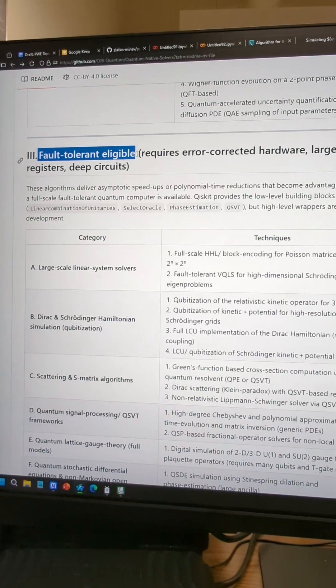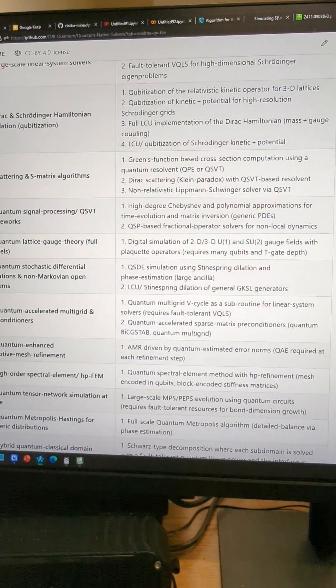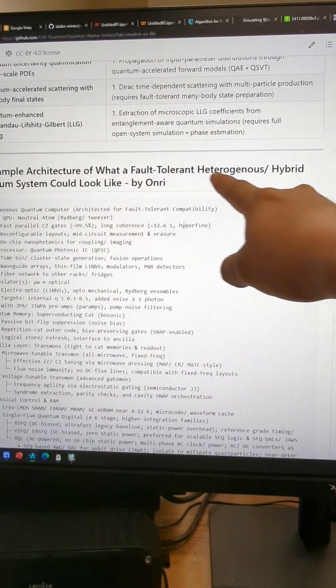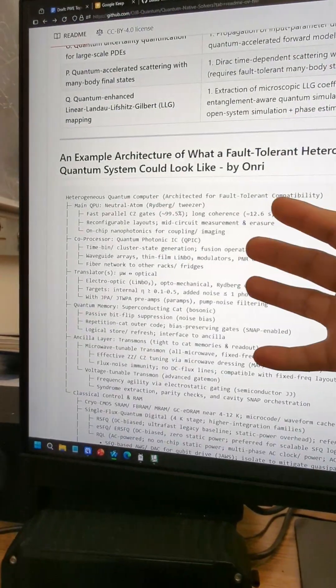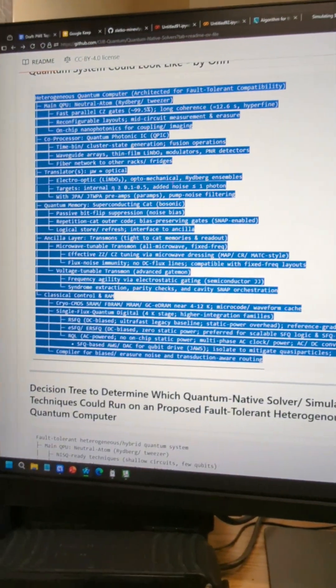And then there's the fault-tolerant techniques. These techniques here are all eligible for fault tolerance. And then if you were to look at a fault-tolerant heterogeneous architecture, what does it look like? Here's an example, a proposal that I have put together. You can read that.